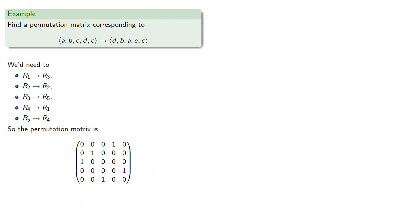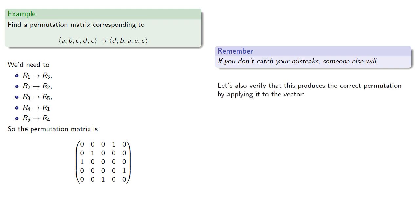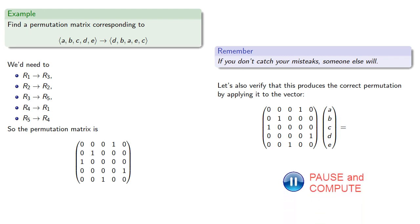And remember, if you don't catch your mistakes, someone else will. This permutation matrix is supposed to produce this permutation, so let's verify that this produces the correct permutation by applying it to the vector. So we'll multiply the matrix by the column vector, and we find it gives us what we wanted to get.